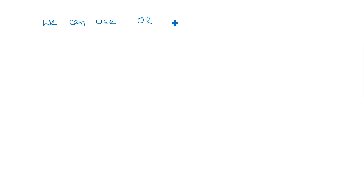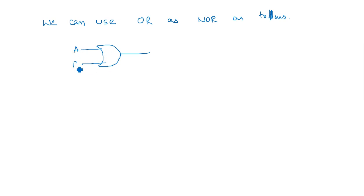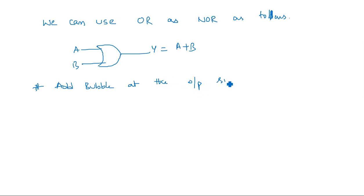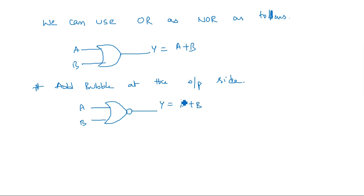Similarly, an OR gate can be implemented using NOR gates. Consider a two-input OR gate with inputs A, B and output Y = A + B. To convert it, add a bubble at the output side of the OR gate.